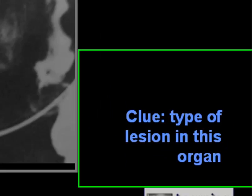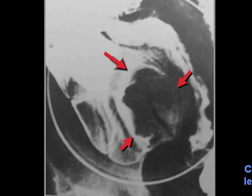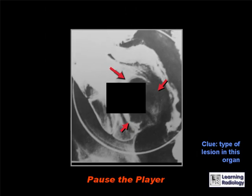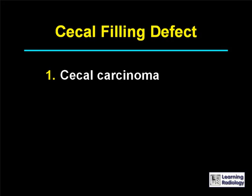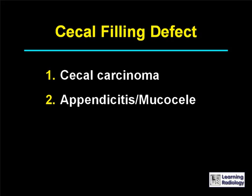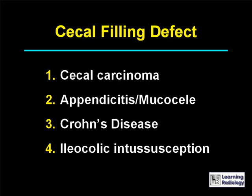The differential is for a cecal filling defect. There are five causes: cecal carcinoma, appendicitis with or without a mucocele, Crohn's disease, ileocolic intussusception, and lymphoma.